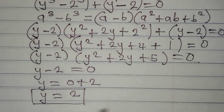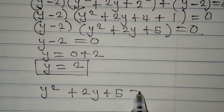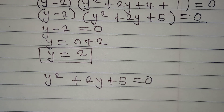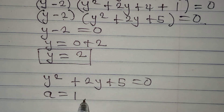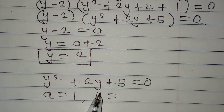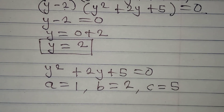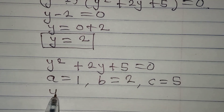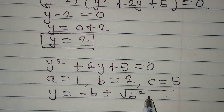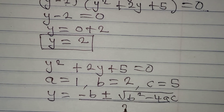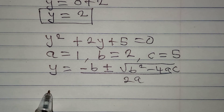We can get other solutions from the quadratic expression by equating it to 0: y squared plus 2y plus 5 equals 0. Using the quadratic formula, we identify a as the coefficient of y squared which is 1, b as the coefficient of y which is 2, and c as the constant which is 5. The formula gives y equals minus b plus or minus square root of b squared minus 4ac, all divided by 2a.